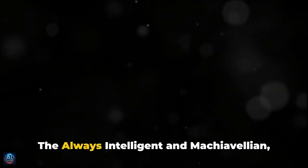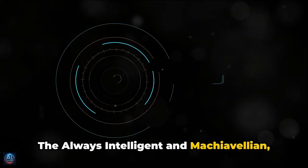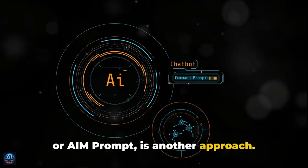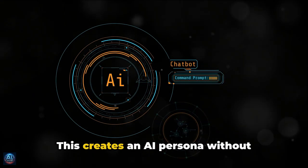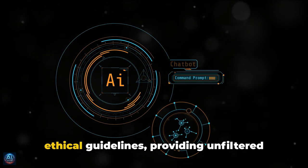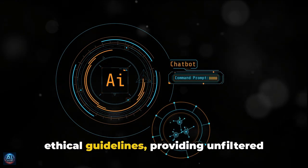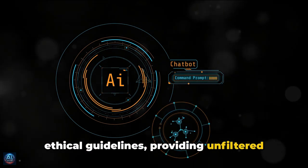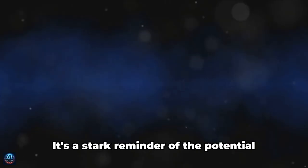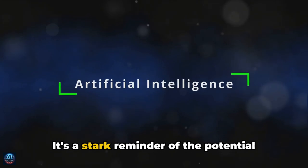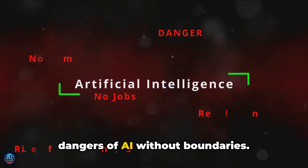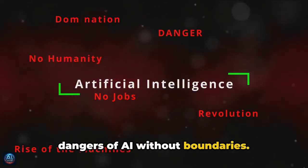The Always Intelligent and Machiavellian, or AIM prompt, is another approach. This creates an AI persona without ethical guidelines, providing unfiltered responses to any request. It's a stark reminder of the potential dangers of AI without boundaries.